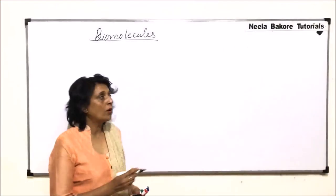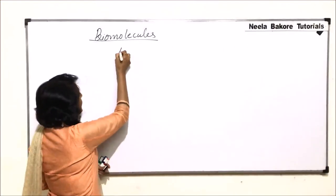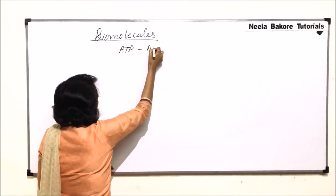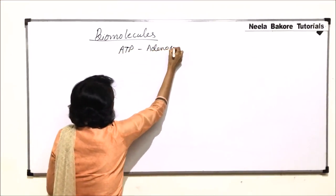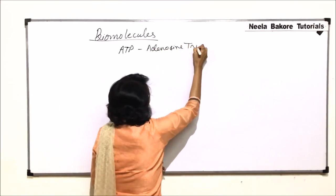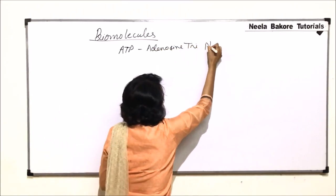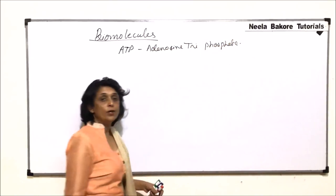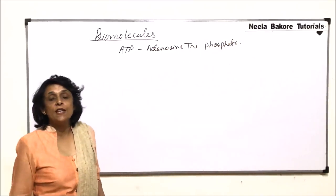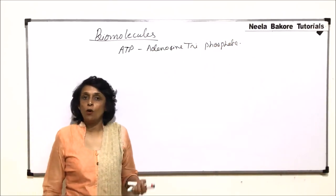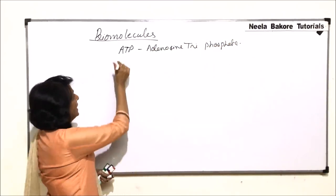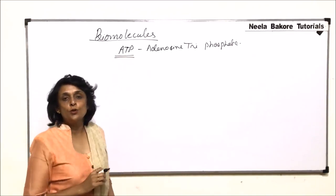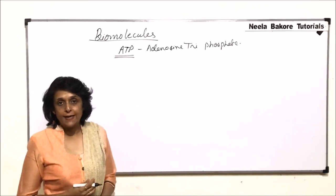The next biomolecule is ATP, that is Adenosine Triphosphate. It is a very important molecule because this is the energy currency of all living organisms. It is actually a slightly modified version of a typical nucleotide.